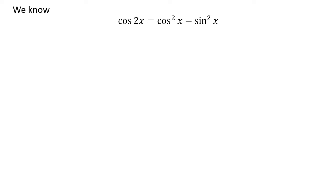We know the famous trigonometry identity cosine of 2 times x is equal to square of cosine of x minus square of sine of x.